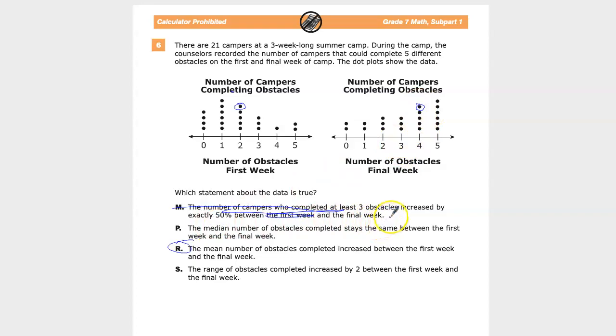There's the 11th point there. The median number of obstacles stayed the same? No, that was not true. They're not in the same spot. This one's at 2, and this one's at 4. That is not true.